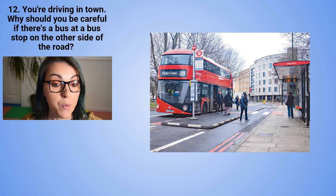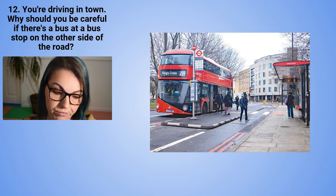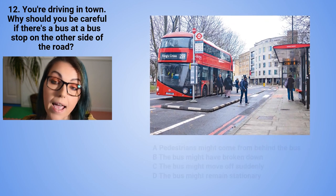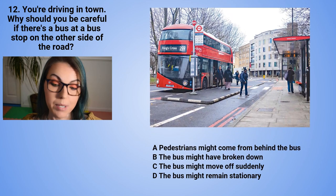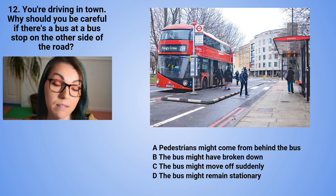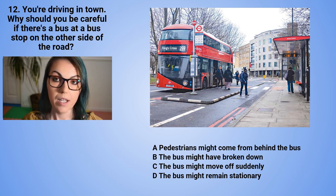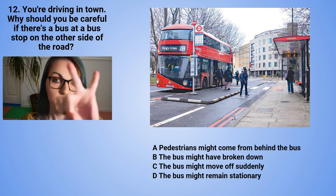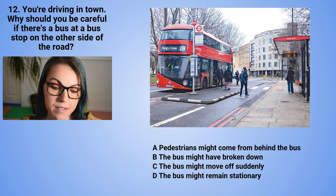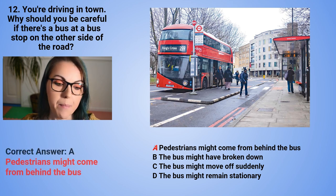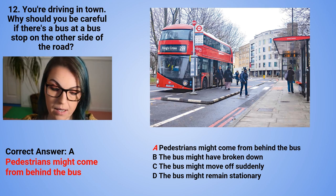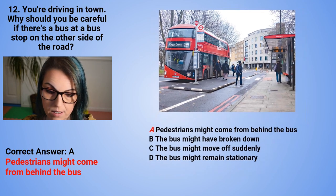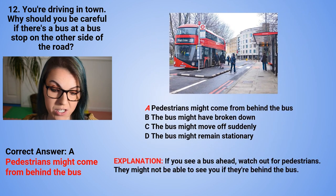Question 12: You are driving in town. Why should you be careful if there is a bus at a bus stop on the other side of the road? A. Pedestrians might come from behind the bus. B. The bus might have broken down. C. The bus might move off suddenly. Or D. The bus might remain stationary. The correct answer is A — pedestrians might come from behind the bus. If you see a bus ahead, watch out for pedestrians — they might not be able to see you if they are behind the bus.